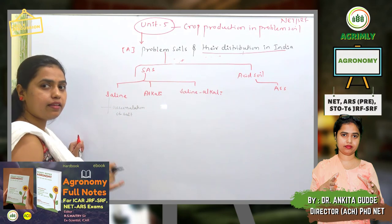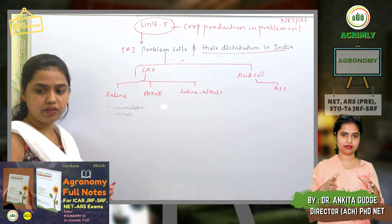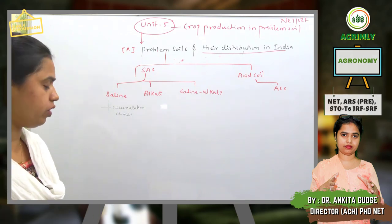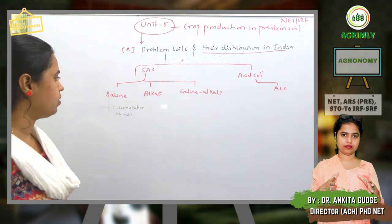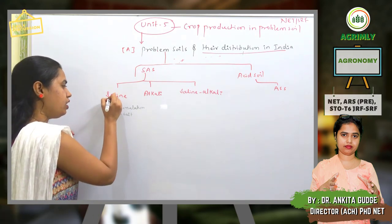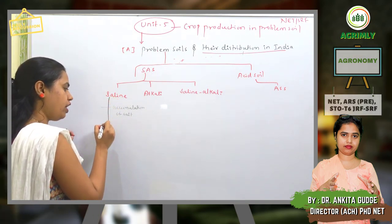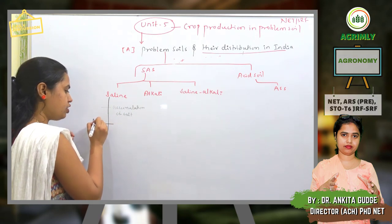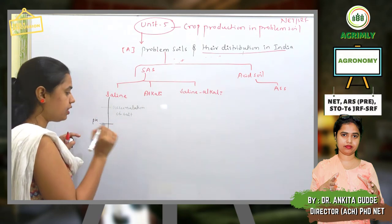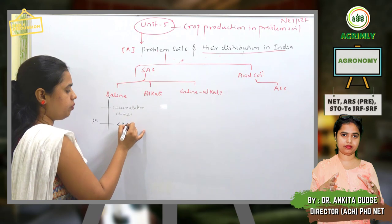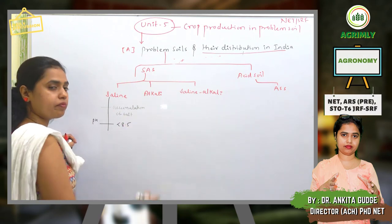A simple definition of saline soil: saline soil has a pH less than 8.5.